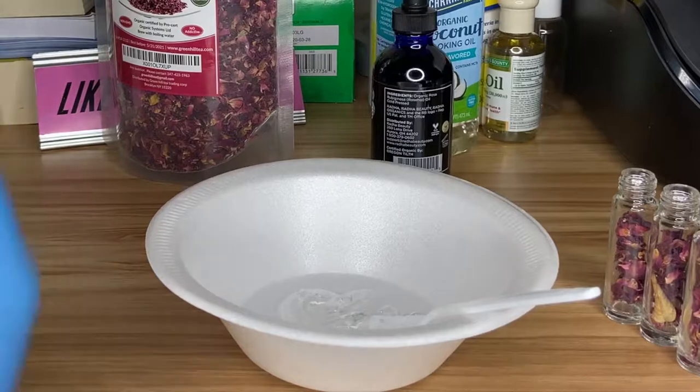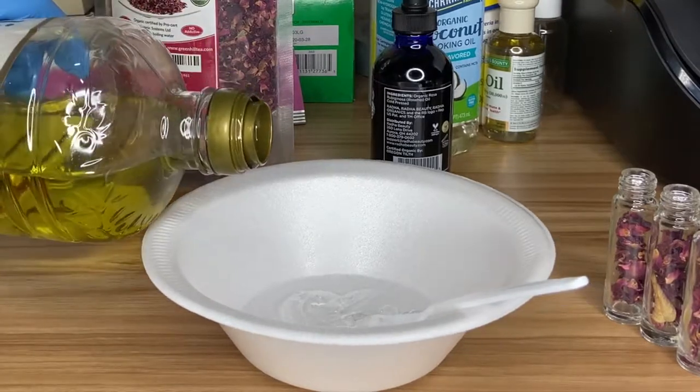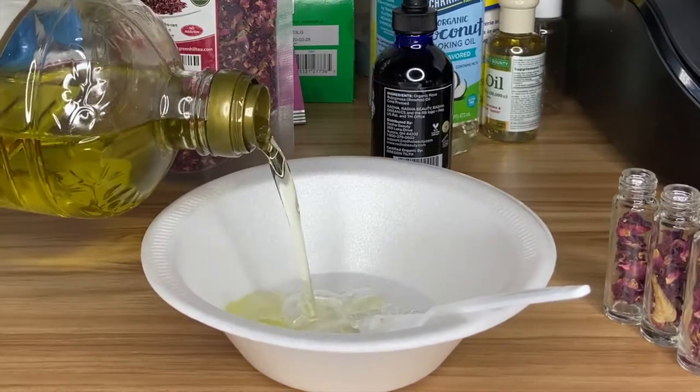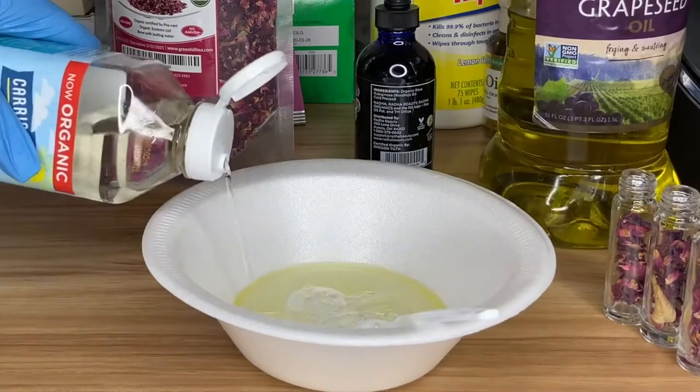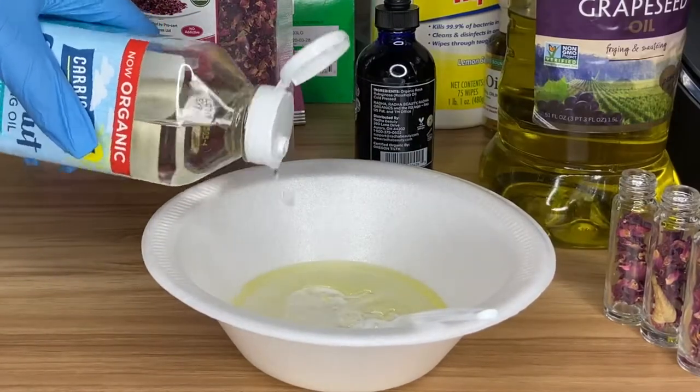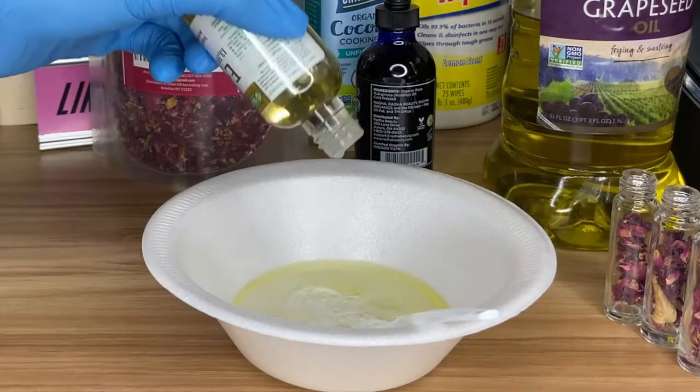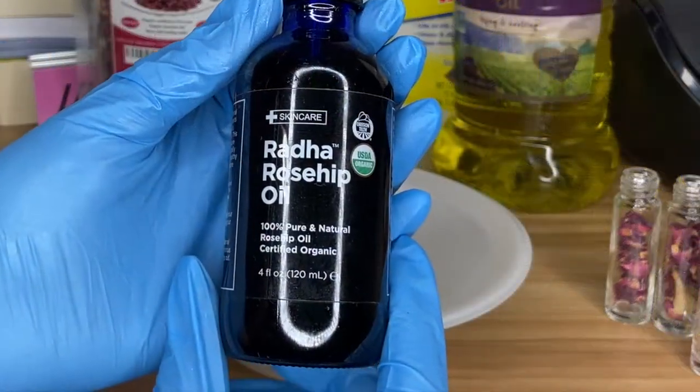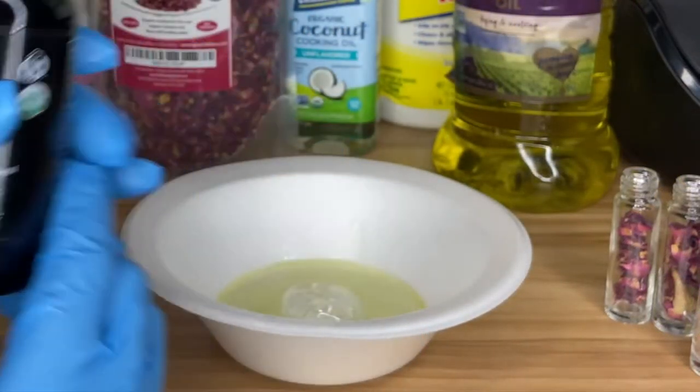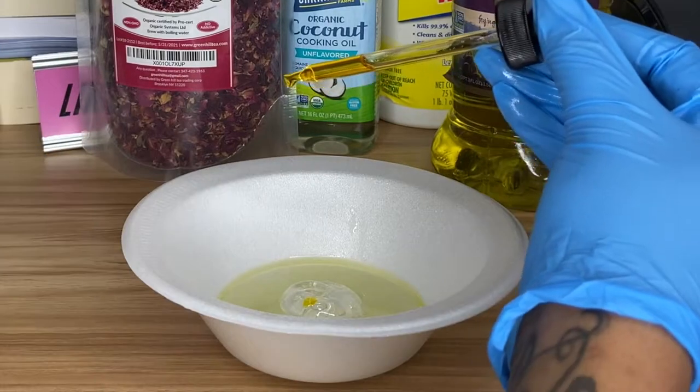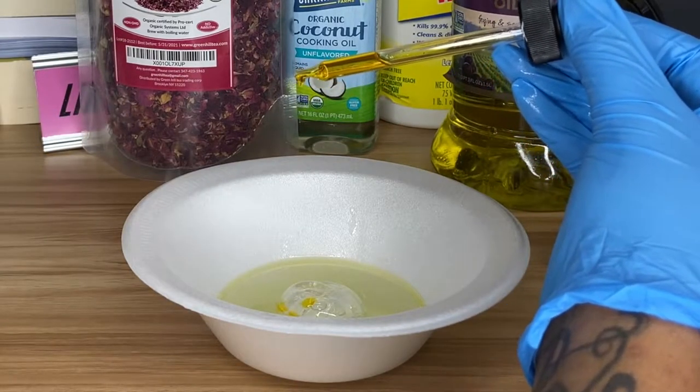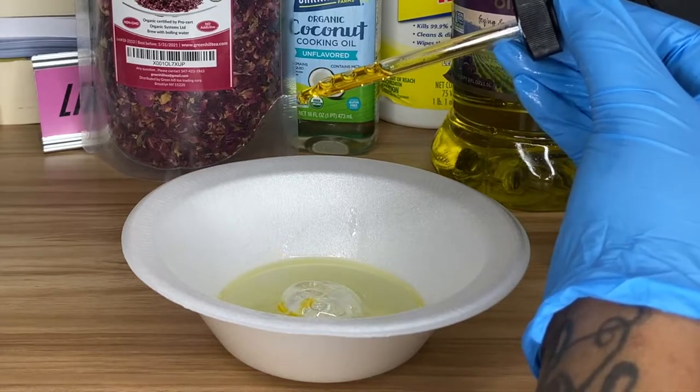The first oil and the main oil I'm going to add is the grapeseed oil. Now I'm going to add organic coconut oil, vitamin E oil, and this is the main oil you want to use: rosehip oil. I am going to add about 10 drops of this oil.